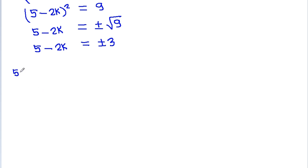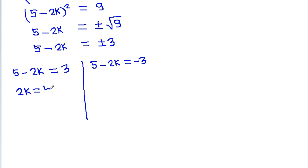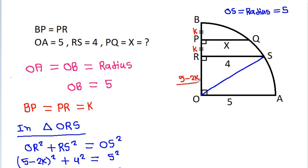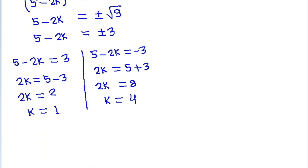So 5 minus 2K equals 3, and 5 minus 2K equals minus 3. From the first: 2K equals 2, so K equals 1. From the second: 2K equals 8, so K equals 4. But 5 minus 2K should be positive, so K must be less than 5 by 2 — that means K cannot be equal to 4. So K is equal to 1.